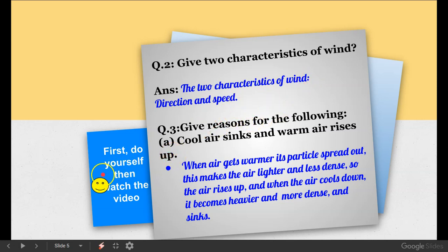Give two characteristics of wind. The two characteristics of wind are direction and speed. Speed and direction are the characteristics of wind. Here I am writing a small note: first do yourself then watch the video. I have told you before that you should do this yourself first, then watch this video. Then you will understand it better.